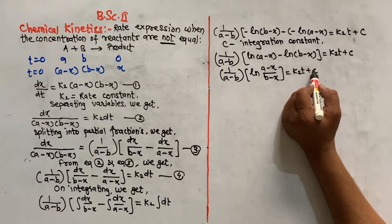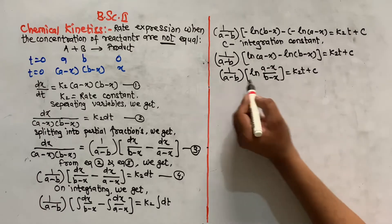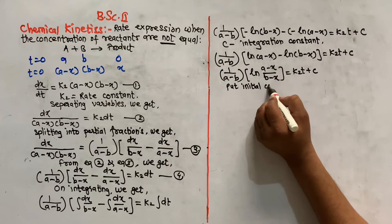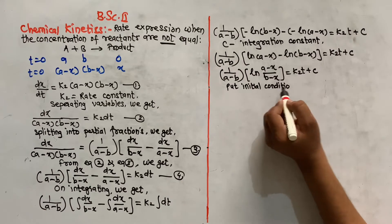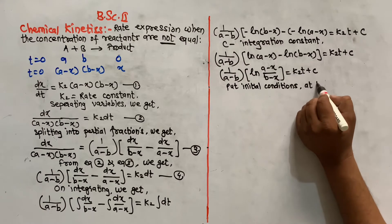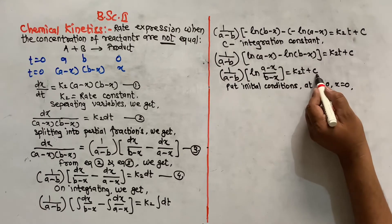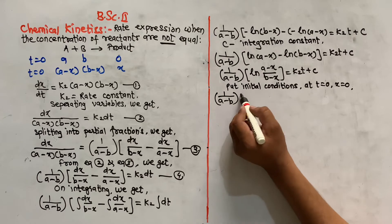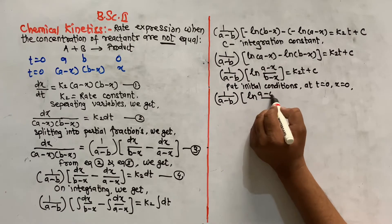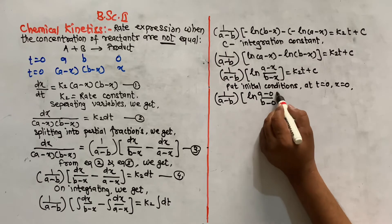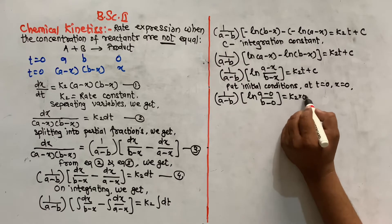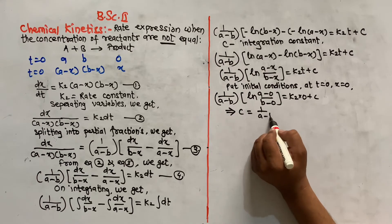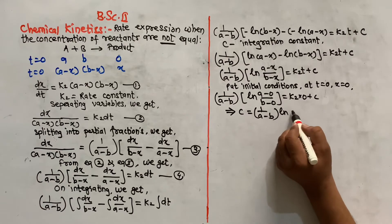To find the integration constant C, we apply initial conditions: at T = 0, x = 0. Substituting, we get 1/(a - b) × ln(a/b) = C. So the value of C is 1/(a - b) × ln(a/b), which is equation number 6.